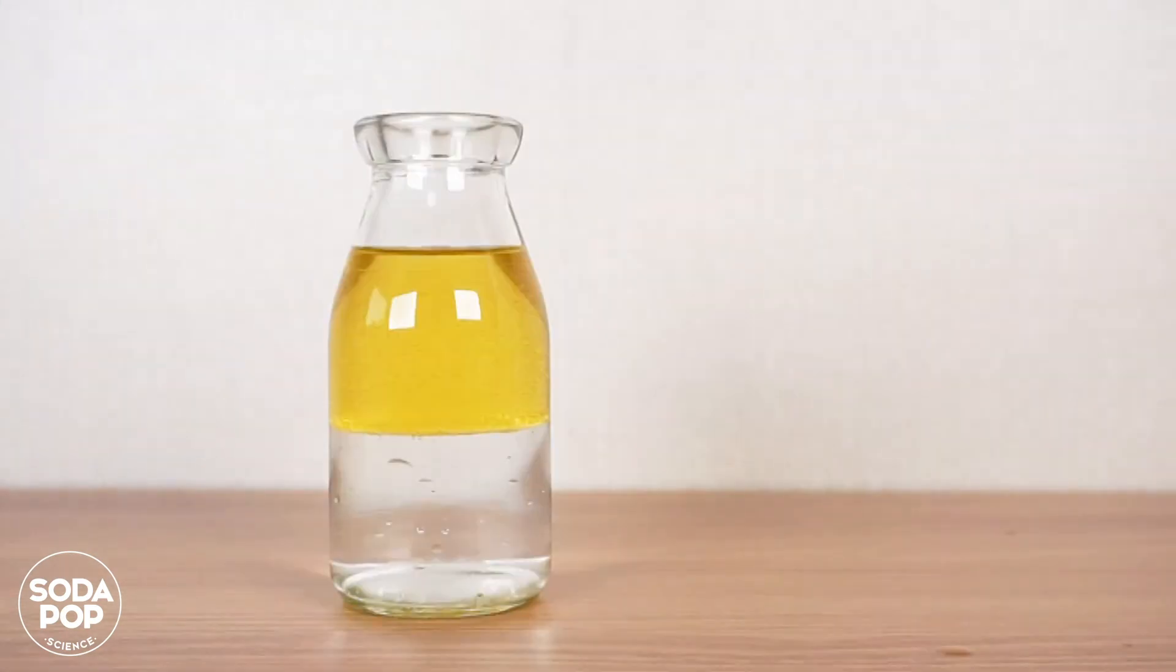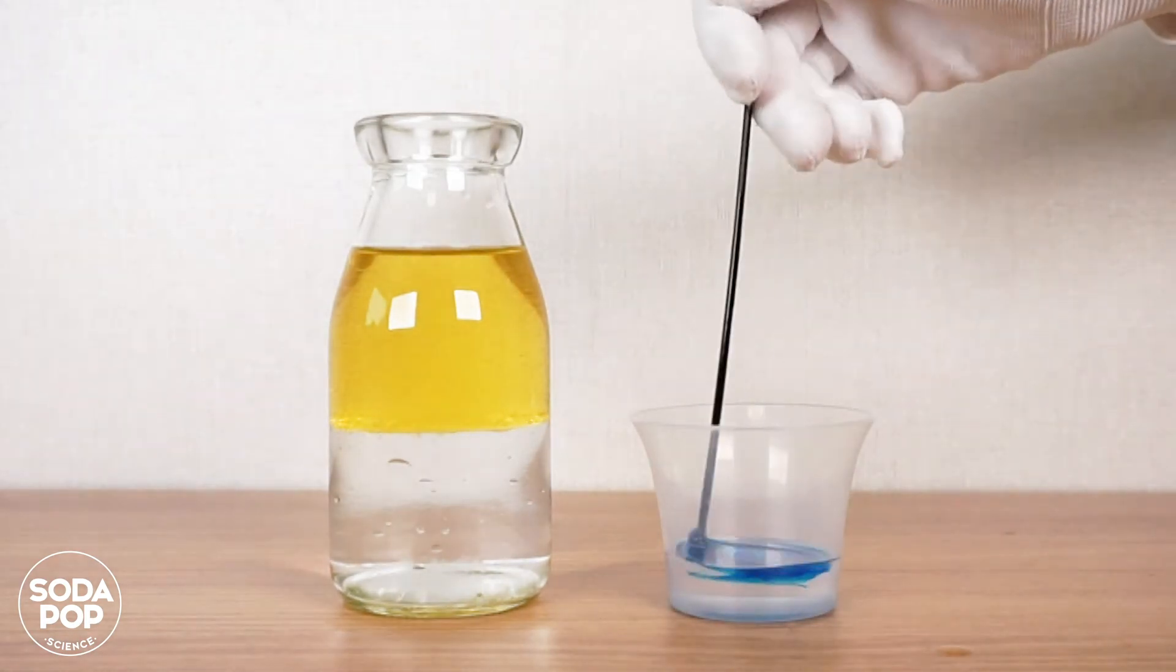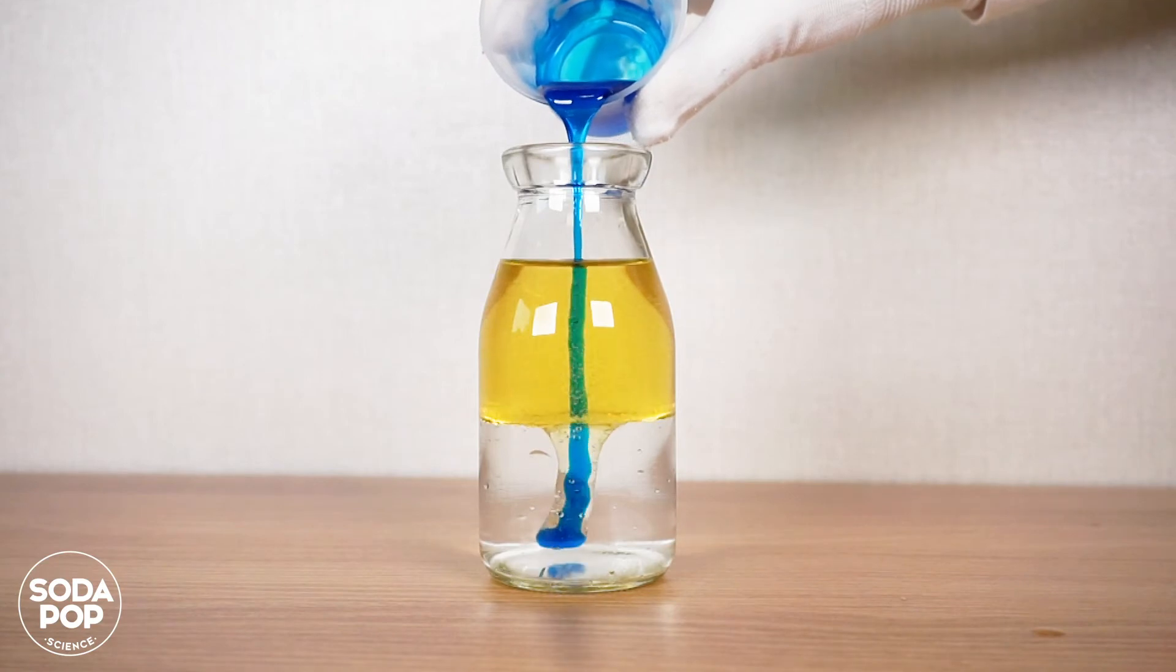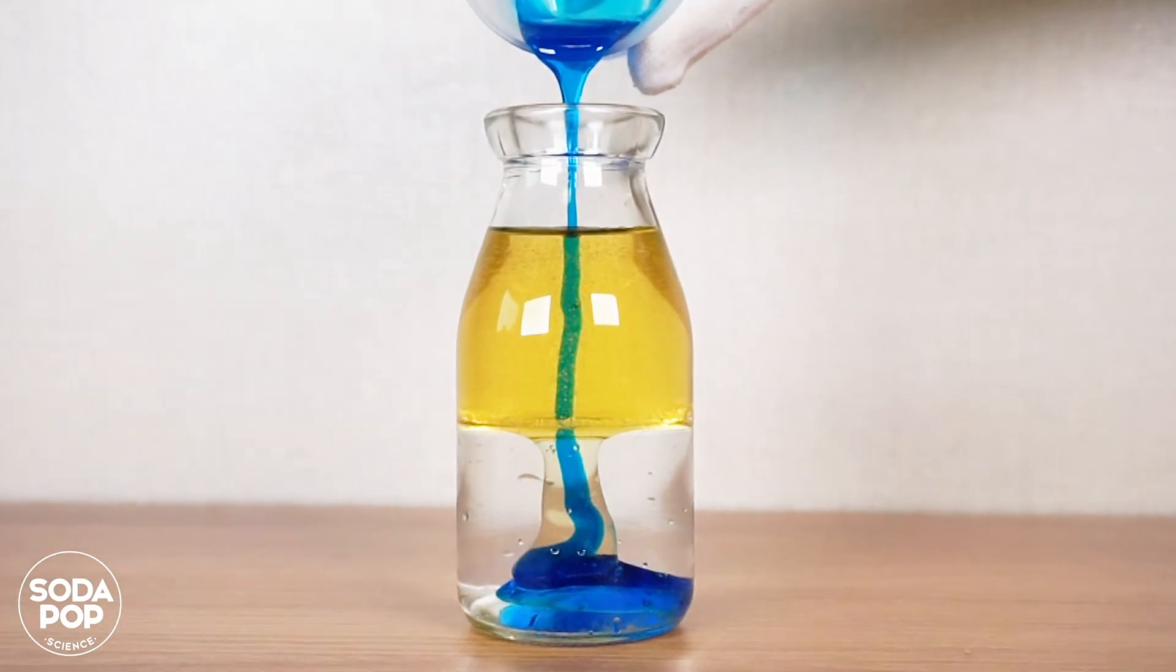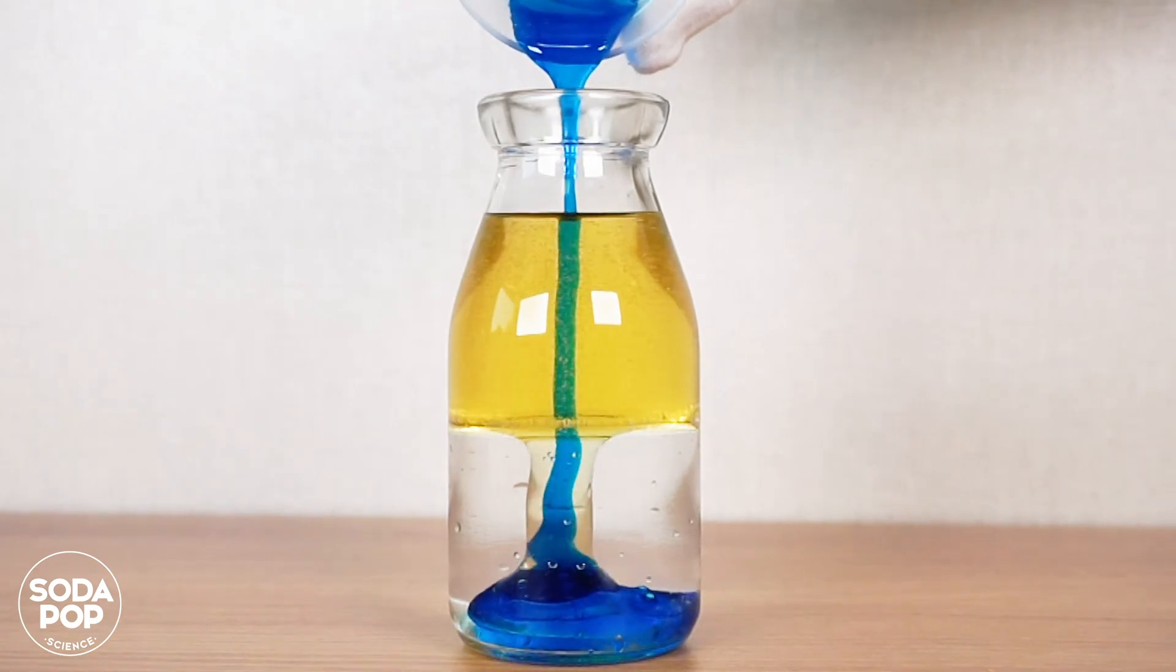Let's try one more thing. I'll pour blue corn syrup, which has the highest density among these three liquids. Let's observe what happens. Wow! Corn syrup passes through oil and water and sinks to the bottom.